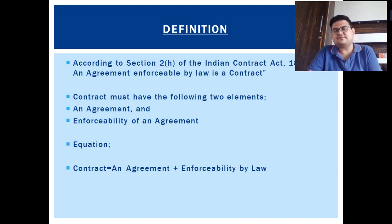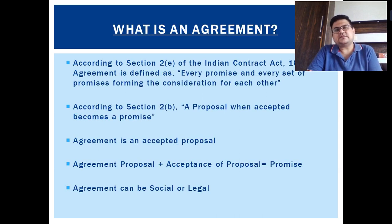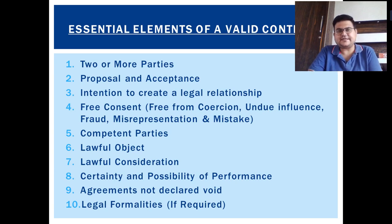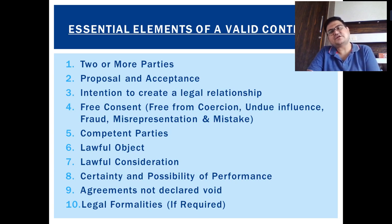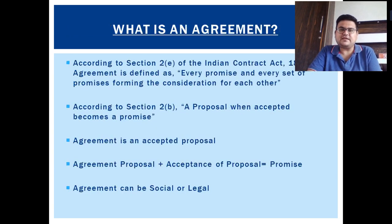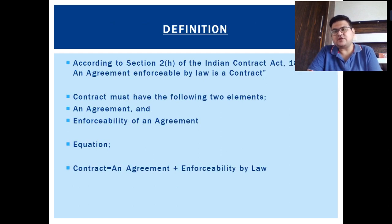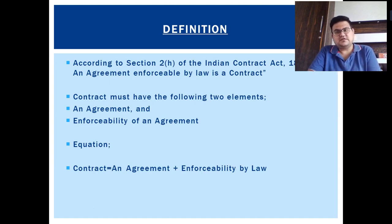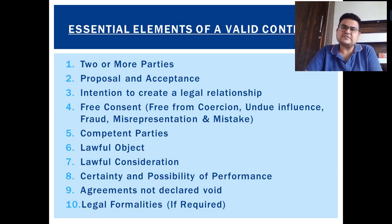So that covers the definitions — contract and agreement. We also discussed in detail the essential elements of a valid contract, which is a very important portion. Remember: it comes under Section 10 of the Indian Contract Act. There are 10 points related to enforceability by law. When you make an agreement and follow all 10 essentials, you have satisfied the requirement of enforceability by law.